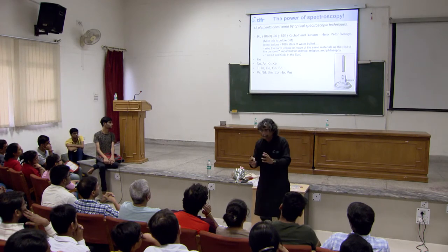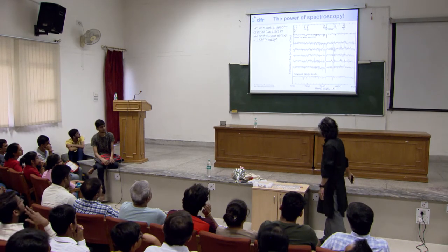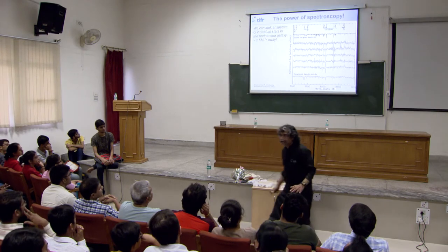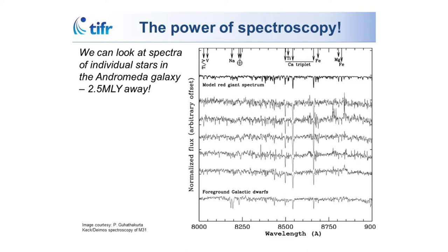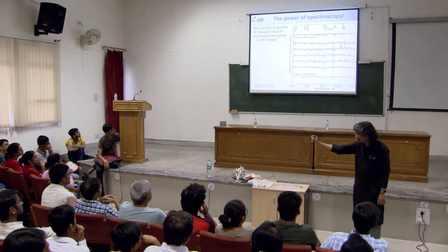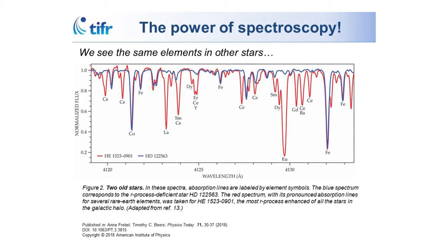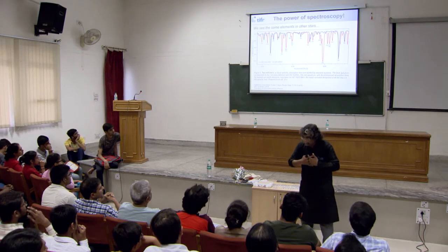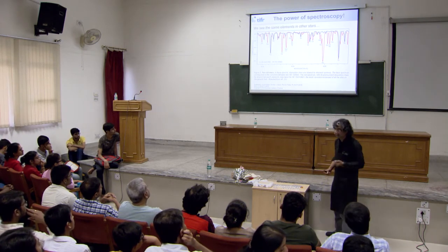This is very important philosophically — people wanted to know, are the elements on Earth the same as the ones in the sun or other places? Today spectroscopy is amazing — you can look at spectra of individual stars in the Andromeda galaxy, two and a half million light years away, resolve individual stars, and see the elements there: signatures of titanium, vanadium, calcium, iron. If you look at different stars in the universe, the red and blue spectra are different but the elements are there — cobalt, lanthanum, samarium, dysprosium, cerium. The spectra are different because stars have different histories, but you can figure out how stars evolved by looking at the elements they contain.